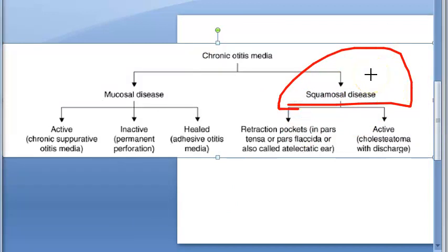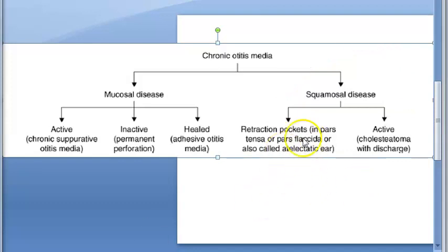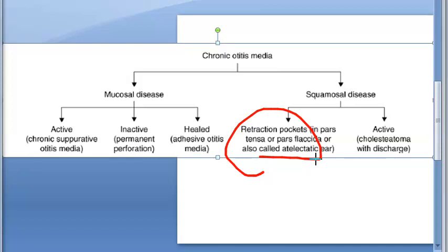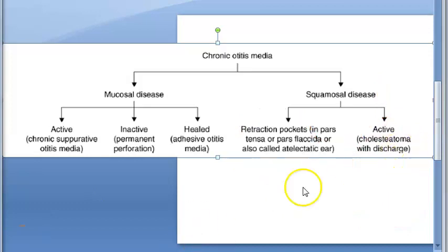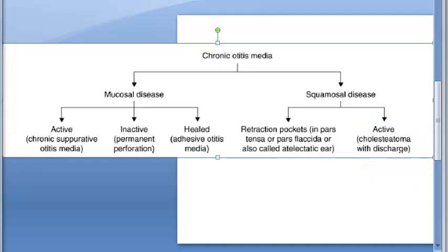In atticoantral disease, there is an inactive form with retraction pockets and no discharge but possible squamous debris, and an active form with discharge. In the active form, there can be cholesteatoma in the posterior superior region of the pars tensa or pars flaccida. This is the dangerous type because it erodes bone, forms granulation tissue, and has purulent offensive discharge.